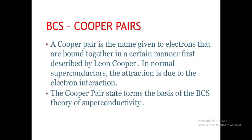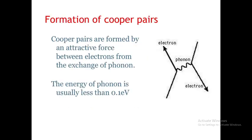A Cooper pair is the name given to electrons that are bound together in a certain manner, first described by Leon Cooper. In normal superconductors, the attraction is due to electron-lattice interaction. The Cooper pair state forms the basis of the BCS theory of superconductivity. Cooper pairs are formed by an attractive force between electrons from the exchange of phonons.